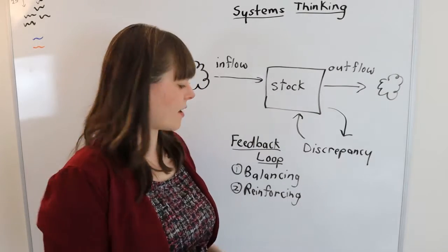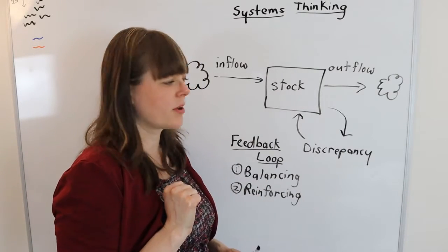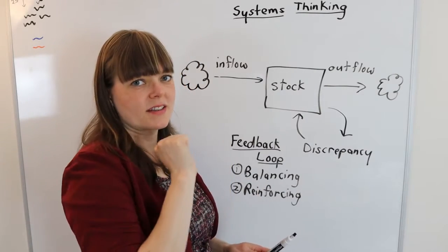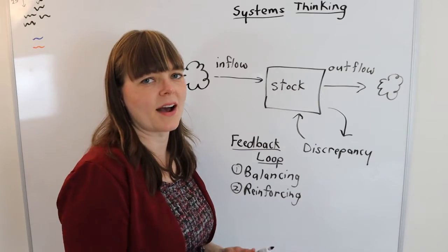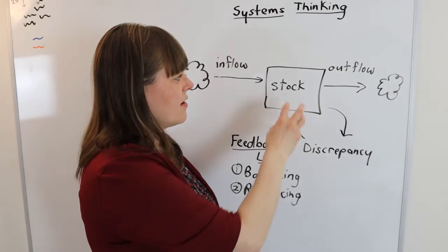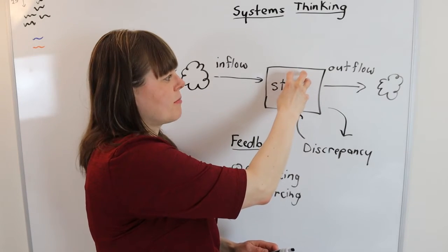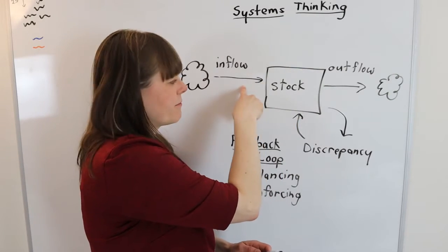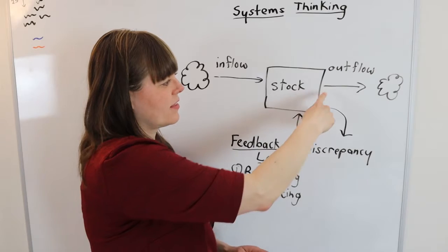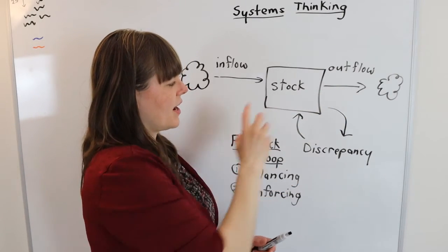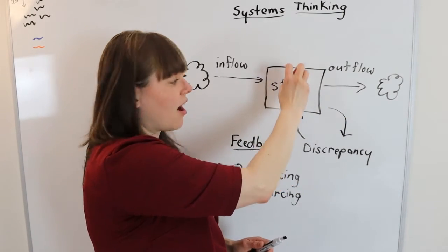I love her example of a balancing feedback loop, which was basically your budget and the amount of money you have in your bank account, where the stock is money in your bank account, the inflow is your income every month, the outflow is your spending every month. If you have a situation where the stock of money in your bank account is less than you would like it to be,